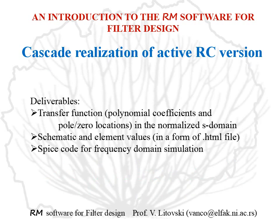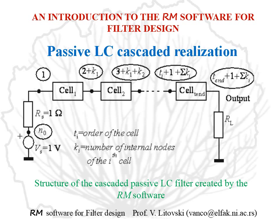The deliverables for cascade active RC realization are the transfer function polynomial coefficients and pole-zero locations in the normalized S domain, a schematic with element values as an HTML file, and SPICE code for frequency-domain simulation, which can also be easily transformed into time-domain simulation.